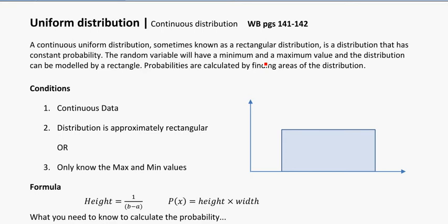Looking at the uniform distribution, this is another continuous distribution for us, like the normal. So we need values that are not counting values, but things like weights and times.